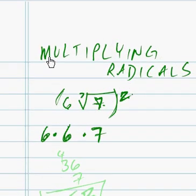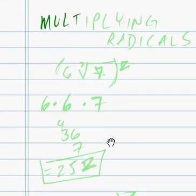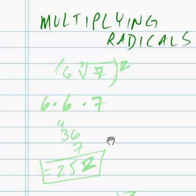Greetings, Dennis Daniels here. Let's talk a little bit about multiplying radicals. This is a fairly common situation and one you should recognize immediately if you have a problem or simplification problem that looks like this: 6 times the square root of 7, all of it squared.